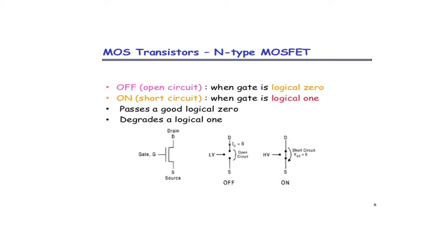For NMOS: if we give logical zero as input, it is an off condition — it is an open circuit, the switch goes to open. If we give logical one as the input, the gate goes to short circuit, meaning it is the on condition, and high voltage is passed from drain to source. So NMOS: zero means off and one means on — just the opposite of PMOS.